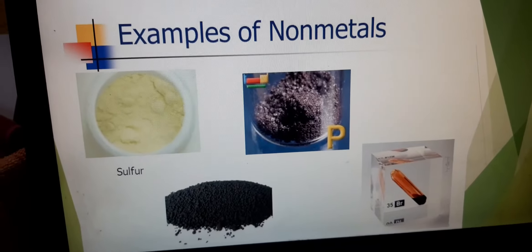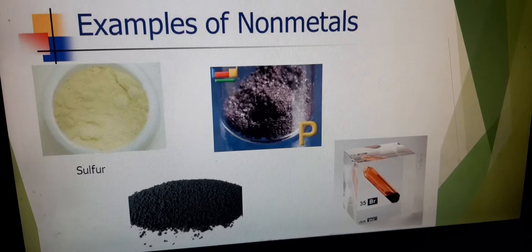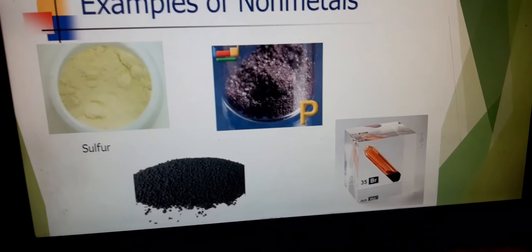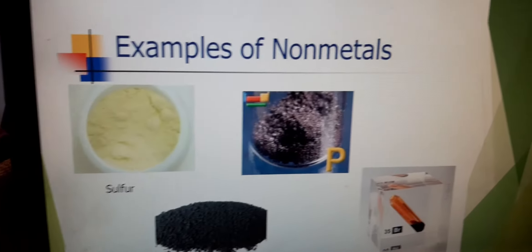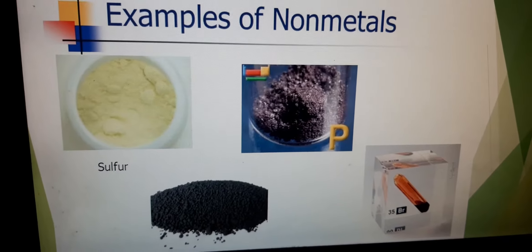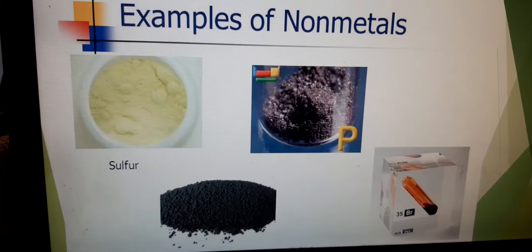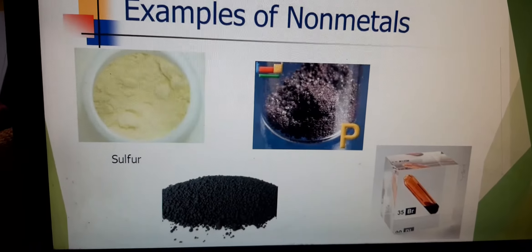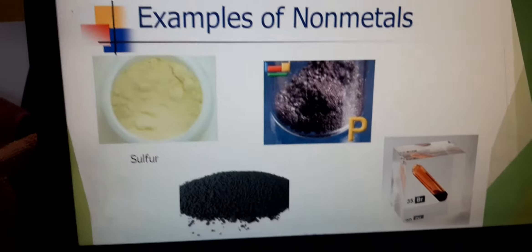These are some examples of non-metals. One is sulphur, another is phosphorus — the symbol is written P. The black colour which you will see, that is carbon, and this one is bromine. So sulphur, phosphorus, carbon, bromine, oxygen, etc. are all non-metals. There are 118 elements found in nature, and out of these, only 22 elements are non-metals.